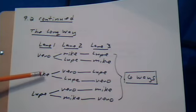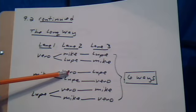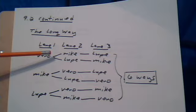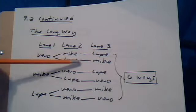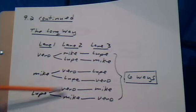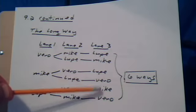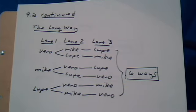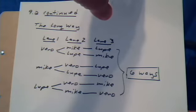Or you could have assigned lane one to Mike, lane two to Vero, and lane three to Lupe, and so forth. If you count each one of these routes, it tells you how the assignment could have taken place. There are six different ways you could assign the three lanes to three people. That was the long way.